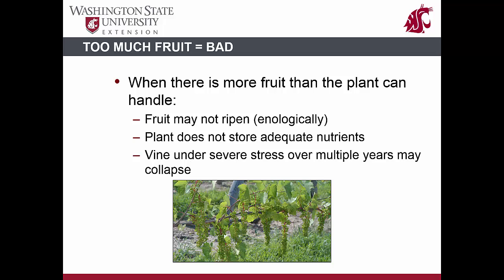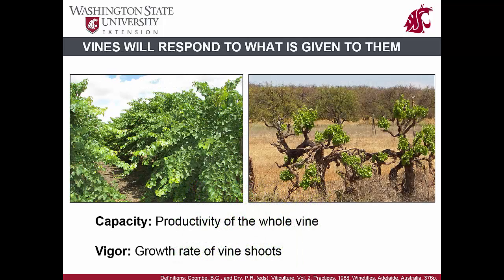If the vine has too little fruit, then the only way the vine can expel energy is through growing additional sinks in the form of new shoots and leaves. The main message in the energy balance concept is that vines will grow to the capacity of what is provided to them. When there is a large source of energy, the vine will expel energy through added growth. If there is insufficient energy, the vine will respond by a reduction in growth.